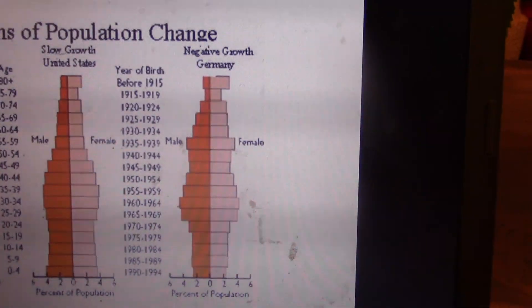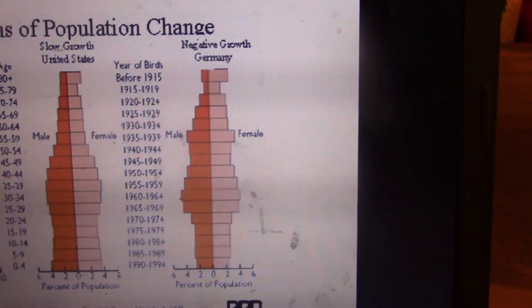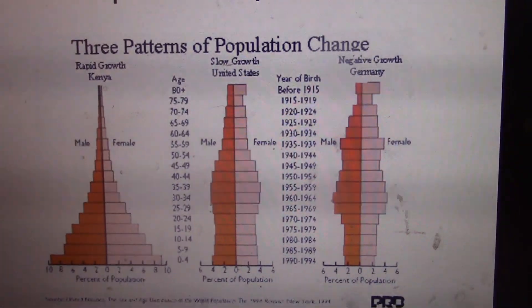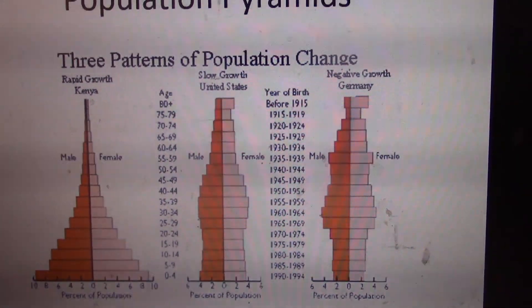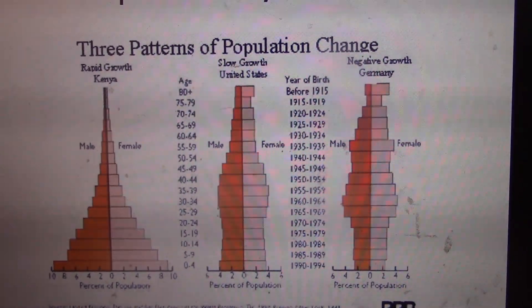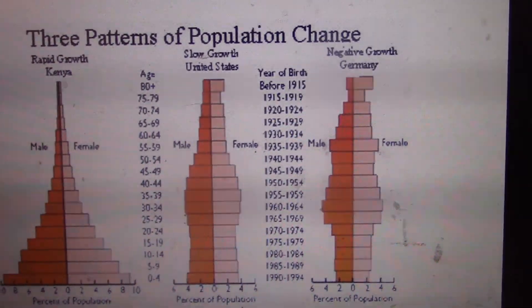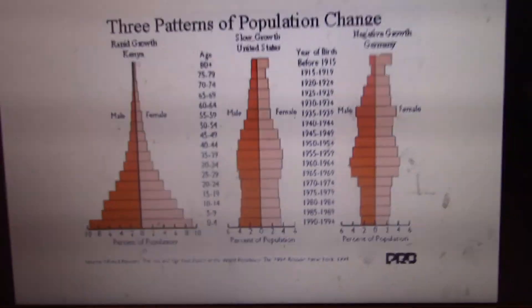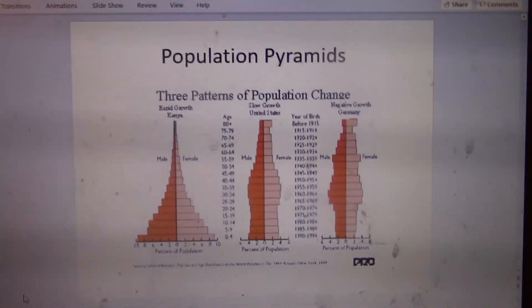These population pyramids are really important for public policy. For example, Germany has an aging population and is trying to stimulate young couples to have children through incentives like paid daycare, free school, and stipends for families. The interesting thing about the US is that even though it's a developed country, it still has a relatively high infant mortality rate and birth rate because of the disparity between the richest and poorest individuals — a large portion of the population is very poor and uneducated, and the wealth gap is only getting worse.